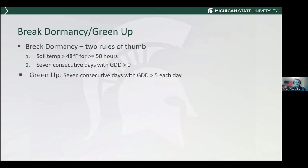The first question I've gotten quite a bit is what impact will the mild winter have on our crop? People want to know, have we broke dormancy? Have we greened up? To break dormancy, there are two rules of thumb. The first is when soil temperatures get up to 48 degrees Fahrenheit for at least 50 hours. The second is having seven consecutive days where growing degree day accumulations for wheat are greater than zero.